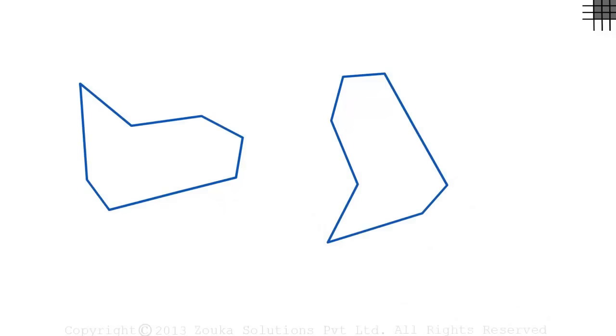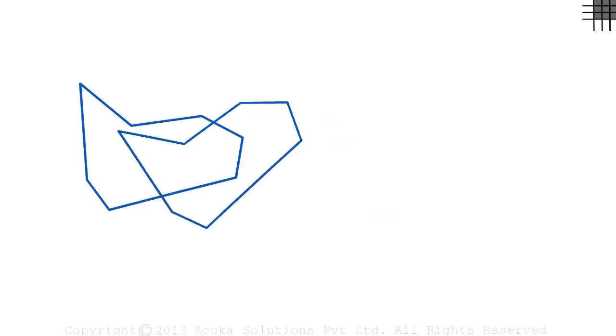At first, they don't look congruent. But that's the trick. This polygon when placed on this one overlaps exactly. So they are congruent too.